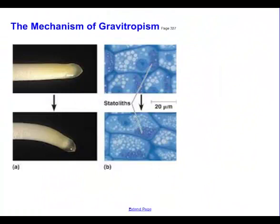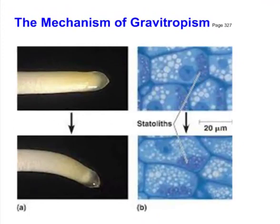The mechanism of gravitropism was discovered later. Here we see a root tip bending down towards the ground due to gravity. We found out that inside plant cells in the root there are calcium deposits called statoliths, and they simply sink by gravity to the lower portion of the cell.